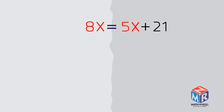First, you need to choose the side for variable terms. It doesn't matter — you can choose any side and get the correct answer. However, the easier way is to pick the side with the greater coefficient of variable terms. Doing it this way, we avoid getting negative coefficients of variable terms.